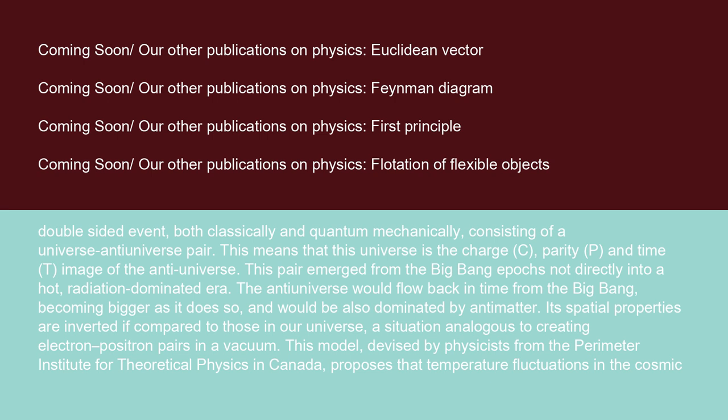This pair emerged from the Big Bang epoch, not directly into a hot, radiation-dominated era. The anti-universe would flow back in time from the Big Bang, becoming bigger as it does so, and would be also dominated by antimatter. Its spatial properties are inverted if compared to those in our universe, a situation analogous to creating electron-positron pairs in a vacuum.